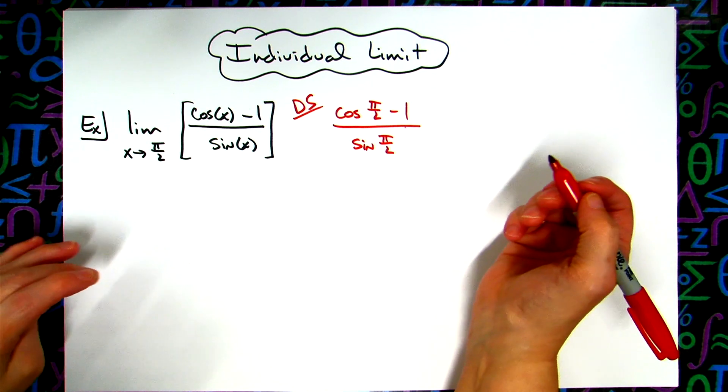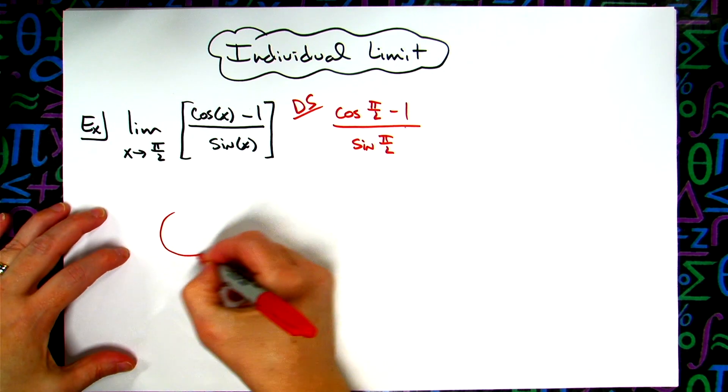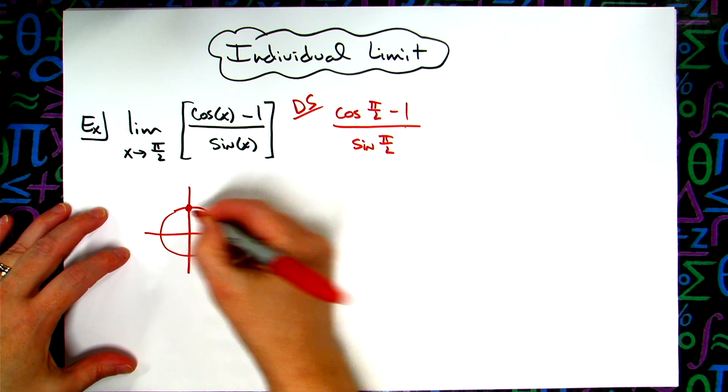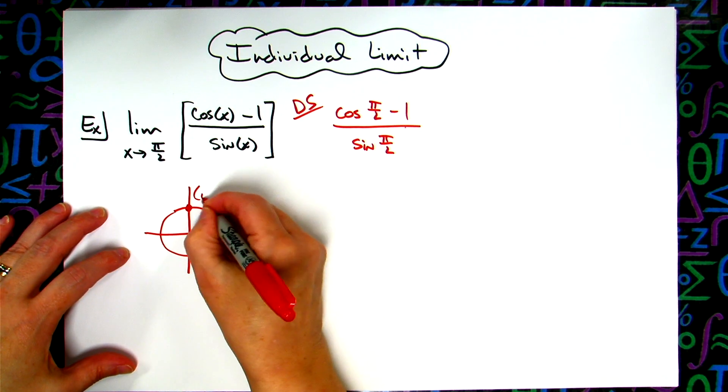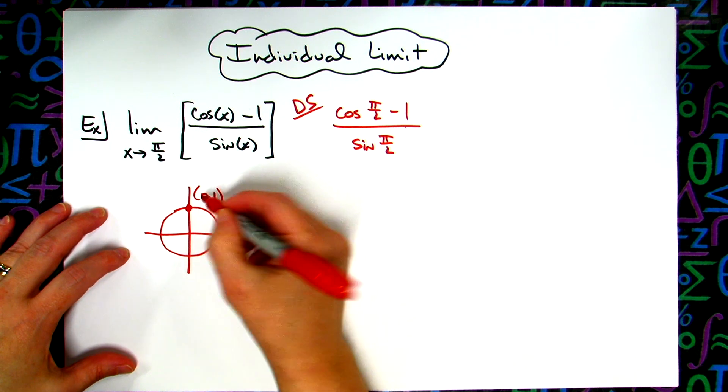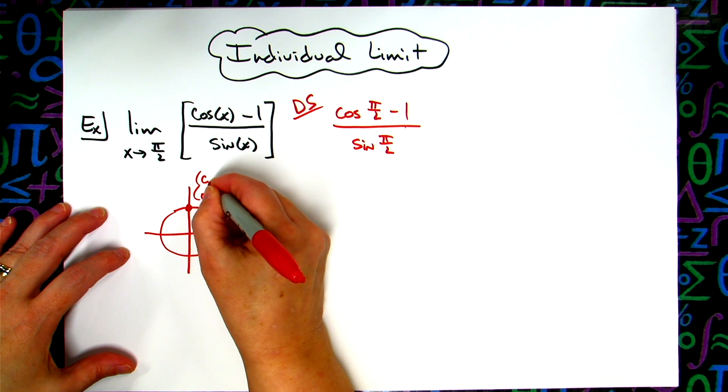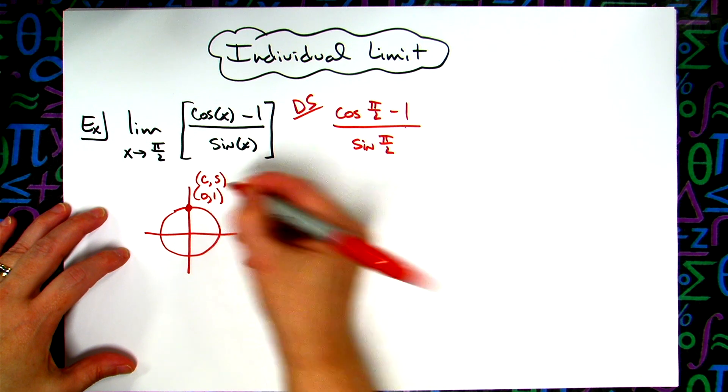Now hopefully you've got your unit circle memorized. If not you can think about that unit circle. Pi over 2 is right here and the ordered pair there is 0, 1. And we know at the ordered pair on our unit circle the first value is our cosine value and the second one is our sine value.